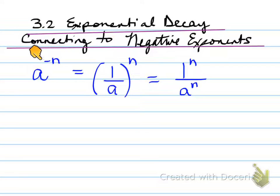What that means is you go and look at the base and flip the base, so it's one over a. The negative then disappears because you've now flipped the base. This exponent n is applied to both the numerator and the denominator so that you get one to the power of n over a to the power of n, which gives you an answer of one over a to the n.